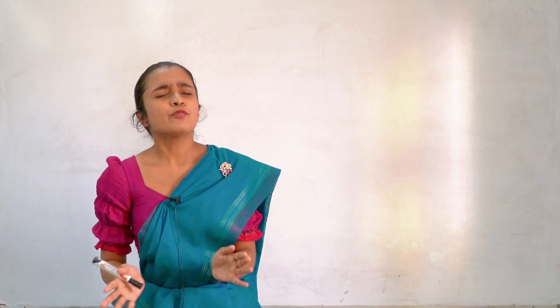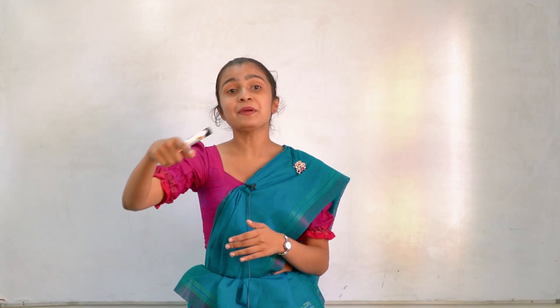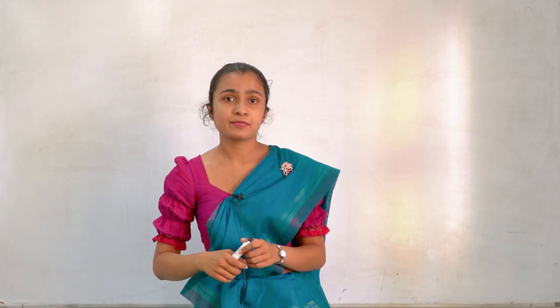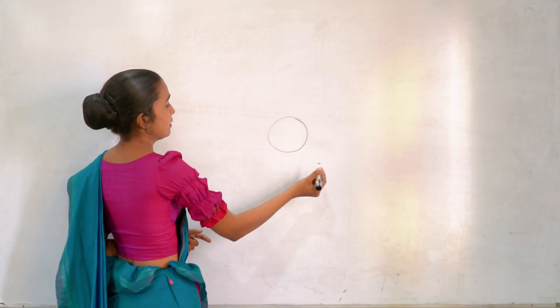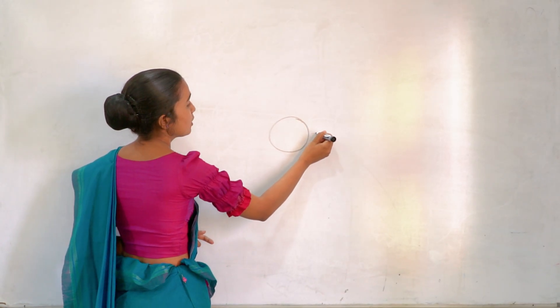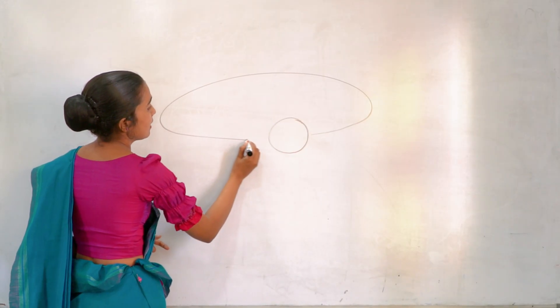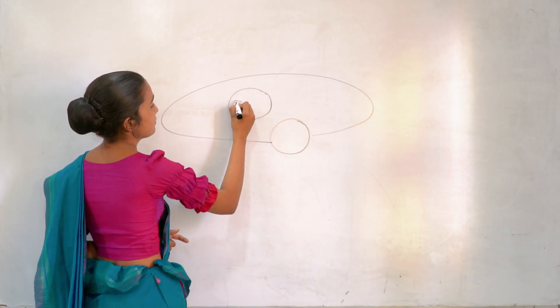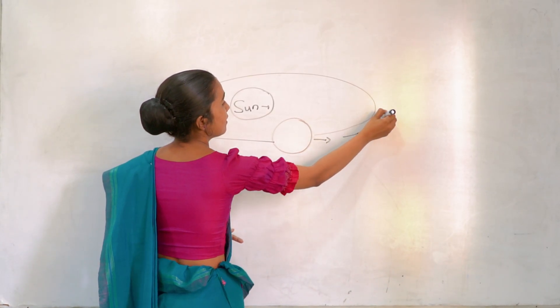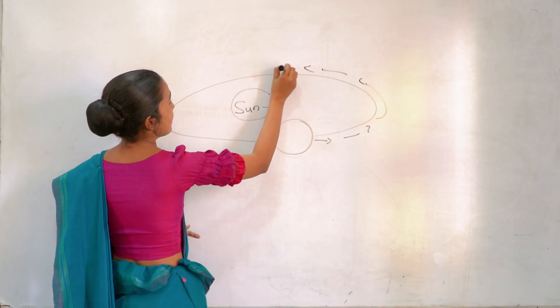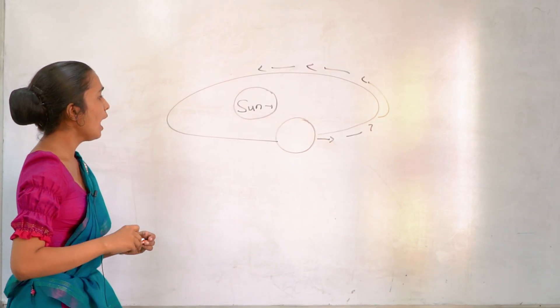And also, how about revolution? Revolution means the Earth rotates its own axis and spinning around the sun. It looks like this. Here, this is the Earth, and it goes like this. And we have sun. So it goes like this way as an eclipse.